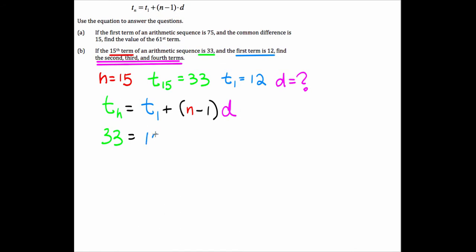T sub 1 in blue, that's 12. N is 15 minus 1 times d. We do not know the common difference. Here's the algebra.